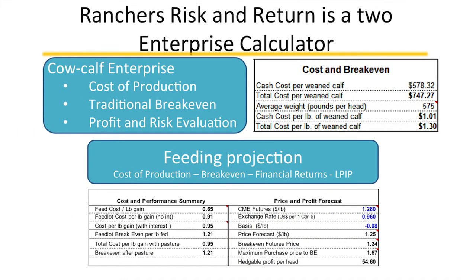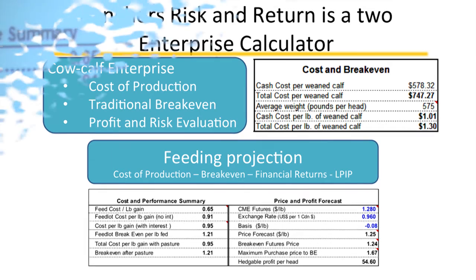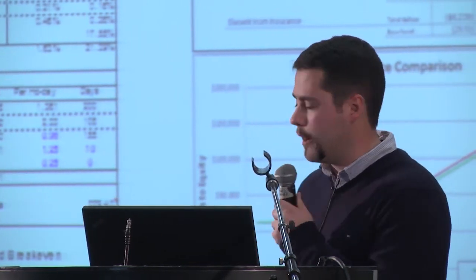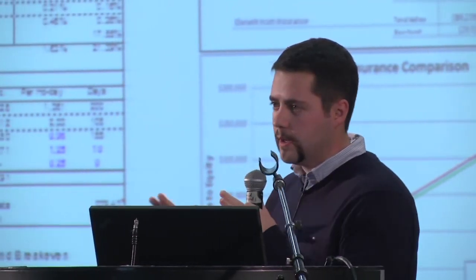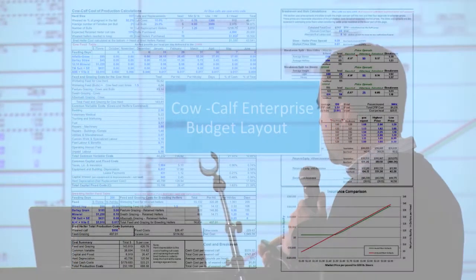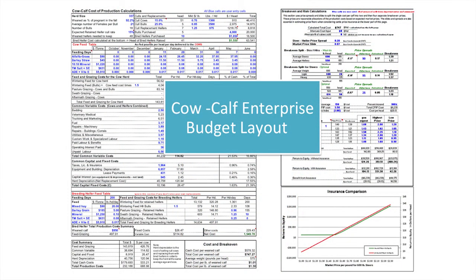The program is set up for two enterprises on an enterprise basis. We have the cow-calf side of the spreadsheet — a traditional tool for cost of production, break-even, and profit and risk evaluation strategies. The numbers in blue are what you put in from your own operation, and the program does the rest of the work. It also gives us a feeding projection for those in the feeding industry, covering cost of production, break-even, financial returns, and an analysis of the livestock price insurance program.